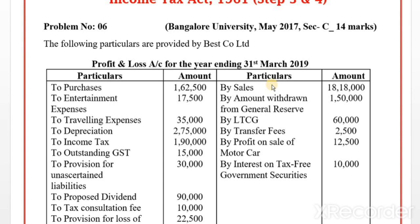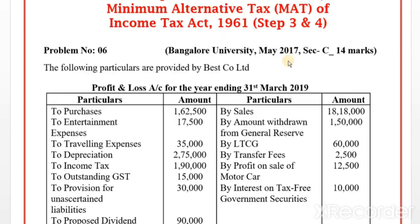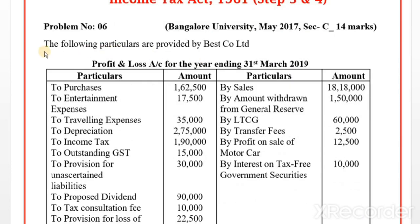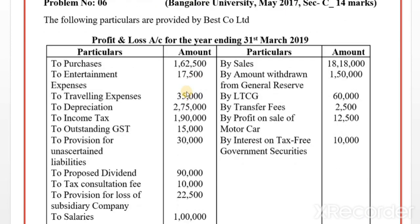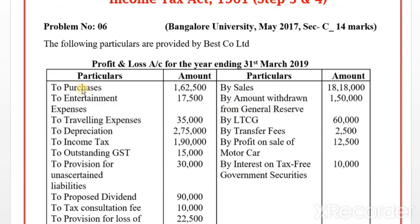This is step number three and four — a different approach from steps one and two. The question provides the following particulars from West Company Limited. Items to note: purchases, entertainment expenses, traveling expenses, and depreciation as per profit and loss account are provided.